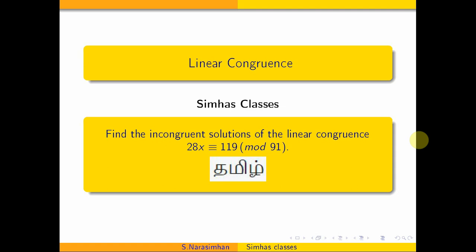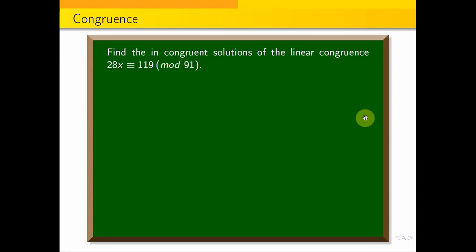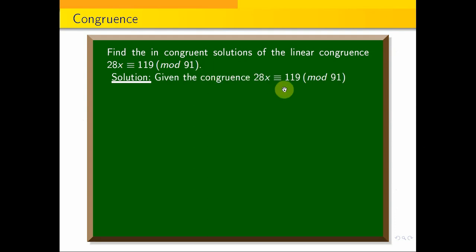Find the incongruent solutions of the linear congruence 28x ≡ 1019 (mod 91). This is the problem. So 28x ≡ 1019 (mod 91). The first step is: